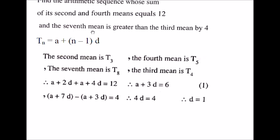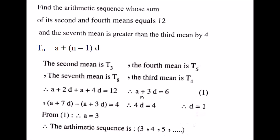The seventh mean is T8 and the third mean is T4. T8 minus T4 equals 4. T8 is A plus 7D and T4 is A plus 3D. So A plus 7D minus A plus 3D equals 4, giving 4D equals 4, therefore D equals 1. Substituting D equals 1 into equation 1: A plus 3 equals 6, so A equals 3. The arithmetic sequence is 3, then 3 plus 1 equals 4, then 4 plus 1 equals 5, and so on.